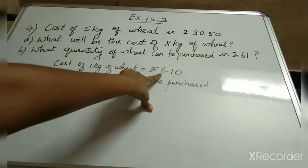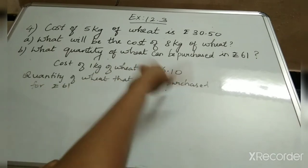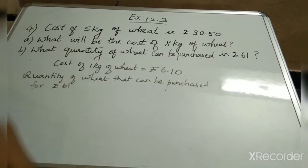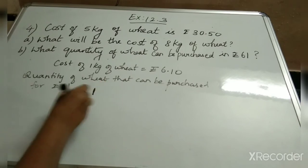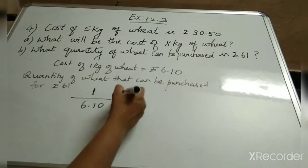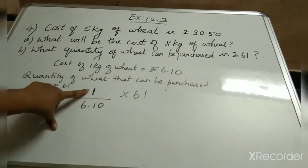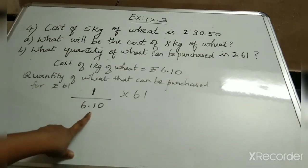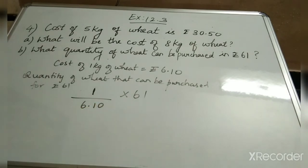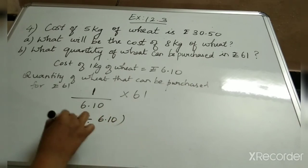For 1 kg the cost is this much. So for 61 rupees, that is finding the other way. For 1 kg the cost is 6.10, so we have to find for 61 rupees by multiplying 61. So, 1 divided by 6.10, into 61. For easy calculation I am writing this decimal number in the form of a fraction.